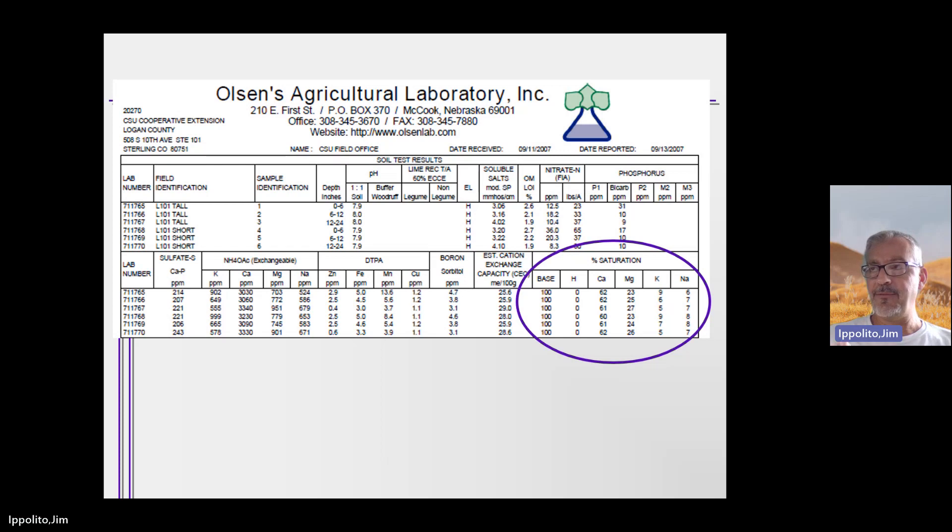This ties back to unit 3 when we discuss pH and the pH scale. If you go back and take a look at the very beginning of unit 3 and the pH scale, when a pH of a solution is 8, that means that the concentration of hydrogen is 10 to the minus 8. It's so small, it's negligible. And so the base saturation in this soil sample is 100.